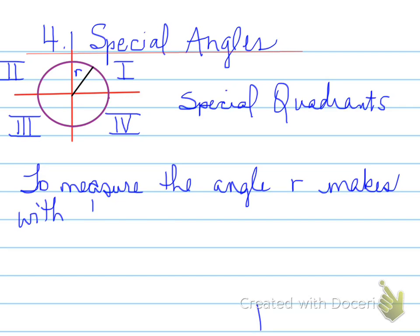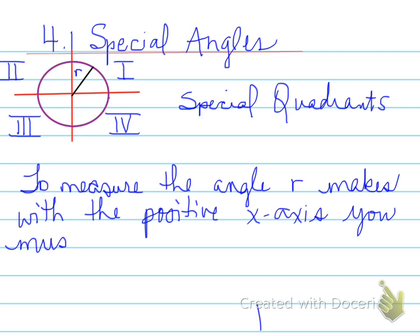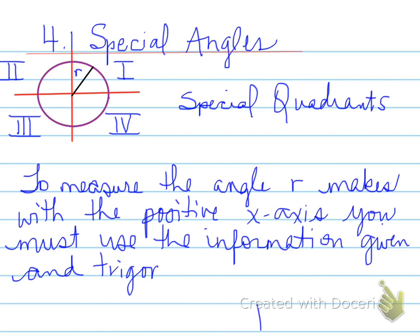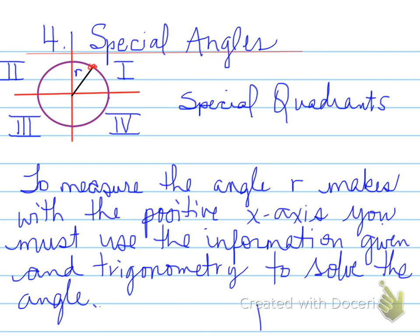To measure the angle R makes with the positive x-axis, you must use the information given and trigonometry to solve the angle. We're going to use different trig ratios depending on what information is given. For example, if you have a point on the circle at the end of the radius called P, we call that point the coordinates x, y on the Cartesian plane. x is the horizontal distance, y is the vertical distance, and x and y make a right angle to create a right angle triangle. You could even use the Pythagorean theorem to determine the special relationship that x, y, and r have with each other.